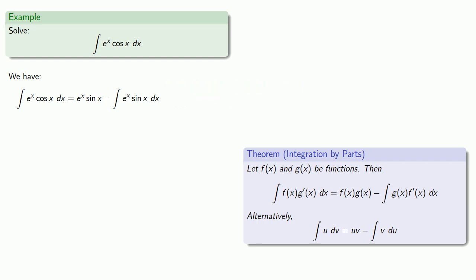This time we notice that if we let u equal sine x and dv equals e to the x, we actually just go back to our original problem. So let's use the choice u equals e to the x and dv equals sine x dx.